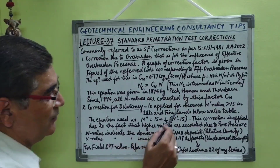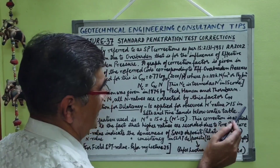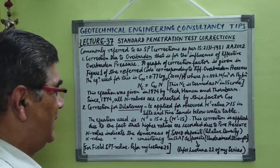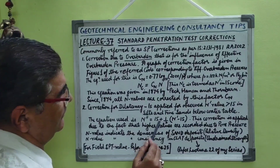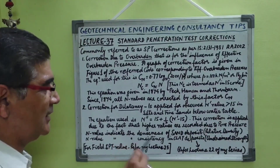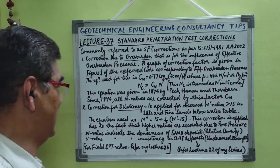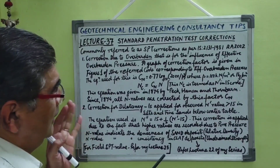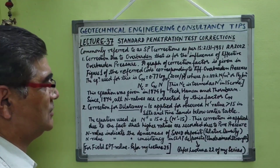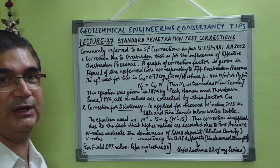The second correction factor is the correction for dilatancy, which is applied when the corrected N' values are greater than 15 and are observed in silts and fine sands below the water table. In that case, the equation used is: N'' = 15 + 0.5 × (N' − 15). This correction is applied because higher values are recorded due to pore pressure conditions present at the site. Both these corrections must be applied to the observed N values before being used in any further geotechnical analysis.